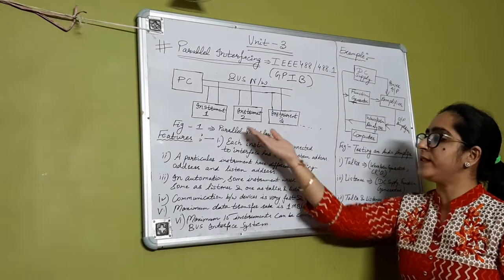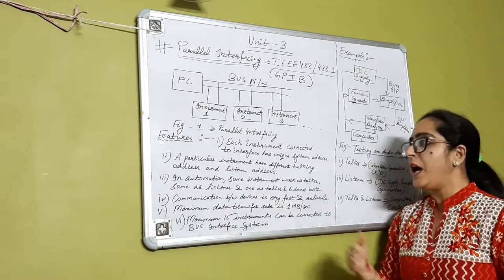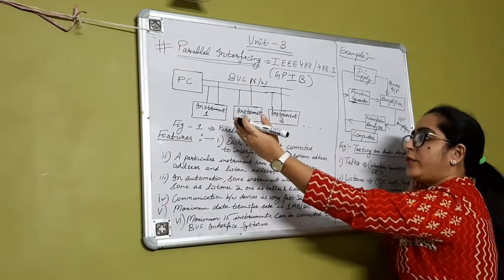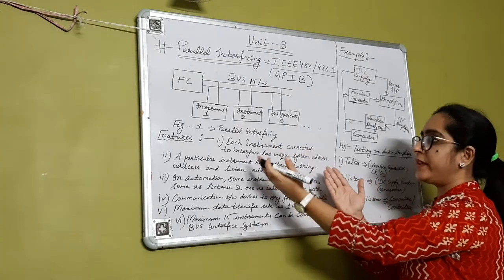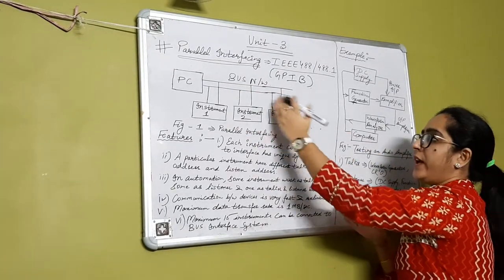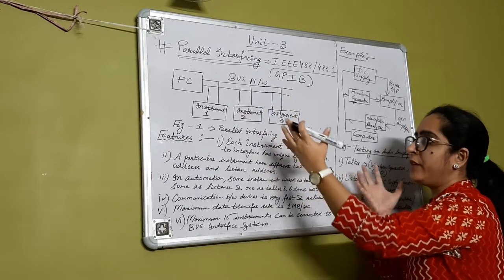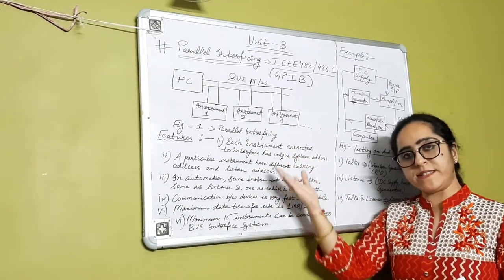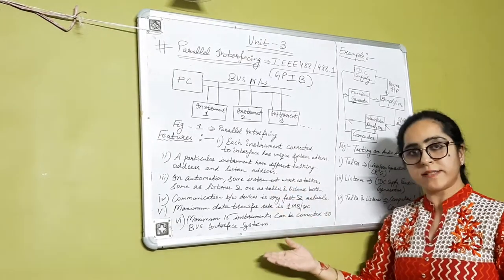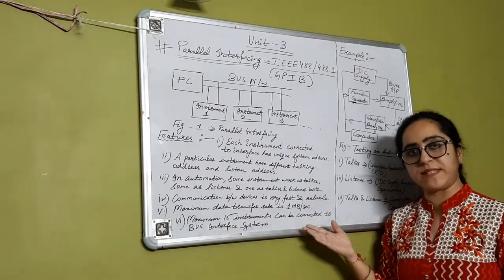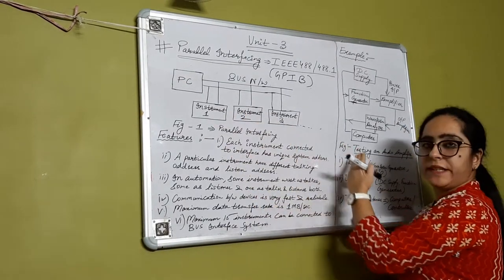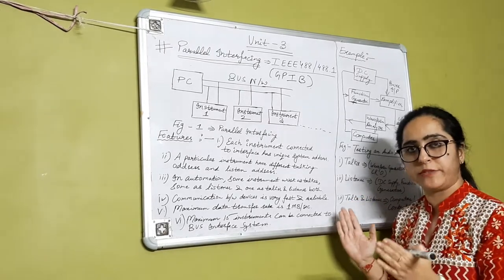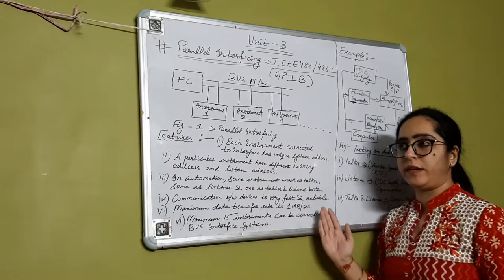The advantage of using the IEEE 488 network is that it makes the process very convenient, as a lot of hardware interfacing is reduced. It brings up to a single interface network through which more hardware and wiring can be reduced. It is easy to reconfigure, very fast, and the maximum data transfer rate is 1 megabyte per second. A maximum of 15 instruments can be connected for a particular application.